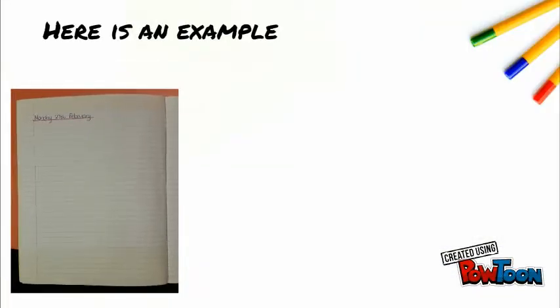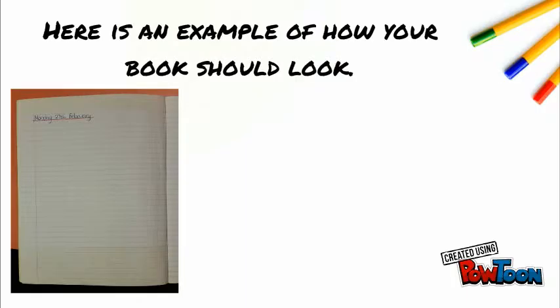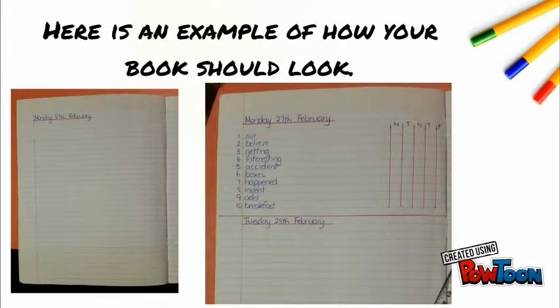Here is an example of how your book should look. The date is next to the margin, underlined in red pen. Then your work follows on underneath that.